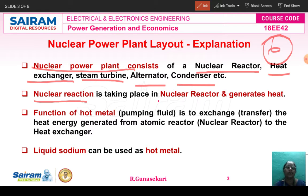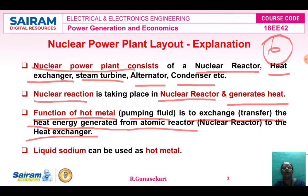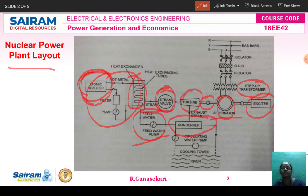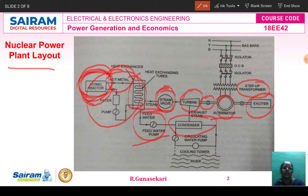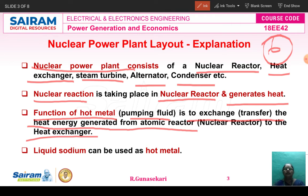The nuclear reaction takes place in the nuclear reactor, generating heat. The hot metal is the pumping fluid. It is used to transfer the heat energy generated from the nuclear reactor to the heat exchanger. With the help of the nuclear chain reaction, heat is transferred from the nuclear reactor to the heat exchanger. Liquid sodium can be used as the hot metal in a nuclear power plant.